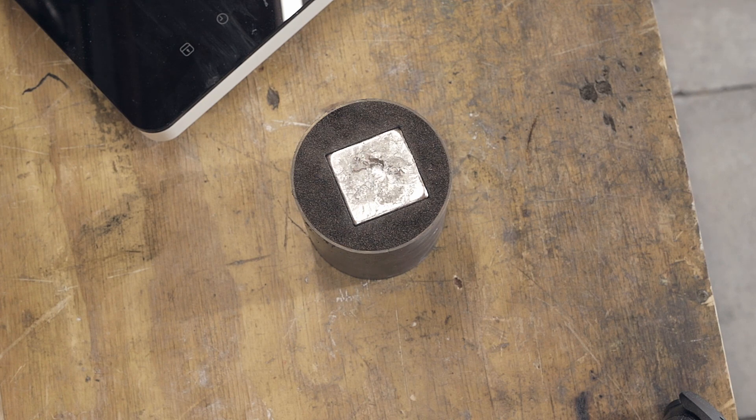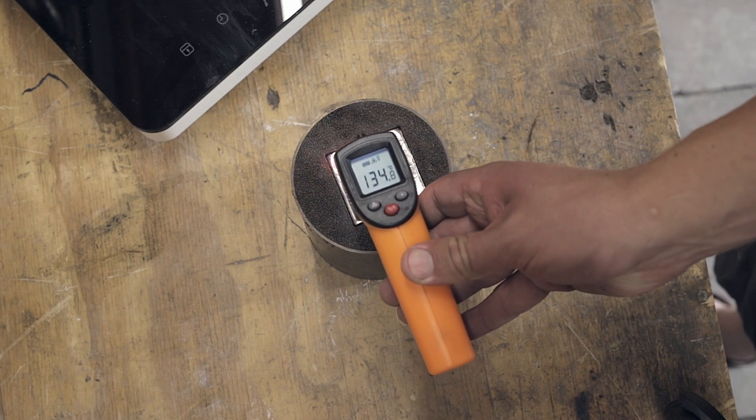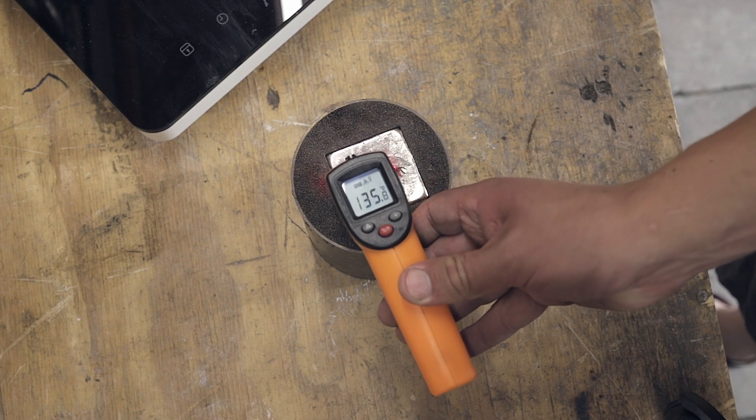While solidifying, the metal contracts quite a lot causing a cavity in the center of the cube. This is to be expected as lead shrinks around 2% when transitioning from being molten to a solid.